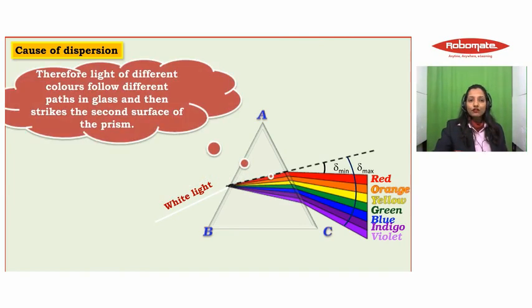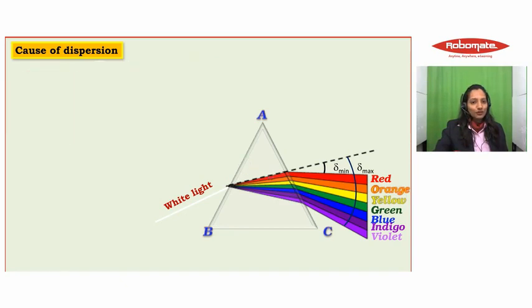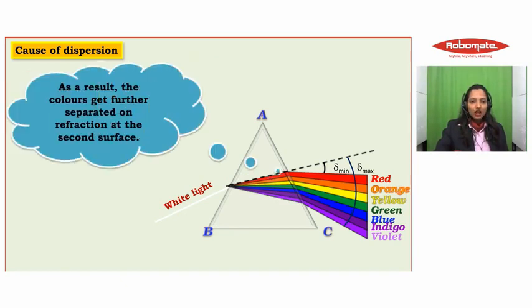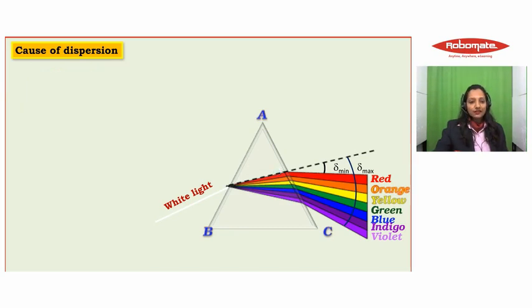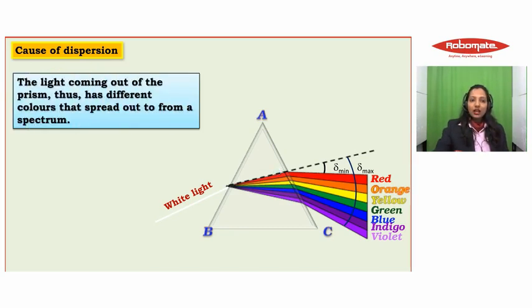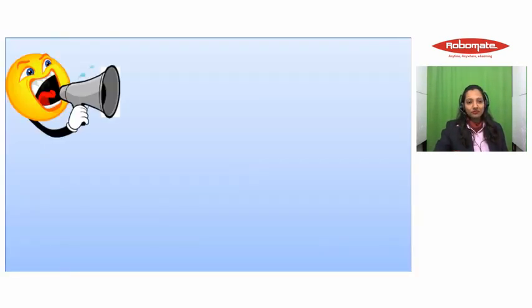The light of different colors follows different paths in the glass and then strikes the second surface of the prism. As a result, the colors get further separated on refraction at the second surface. The light coming out of the prism has different colors that spread out to form a spectrum.